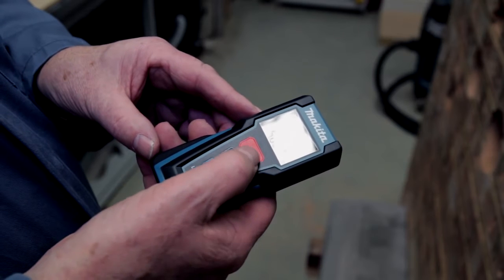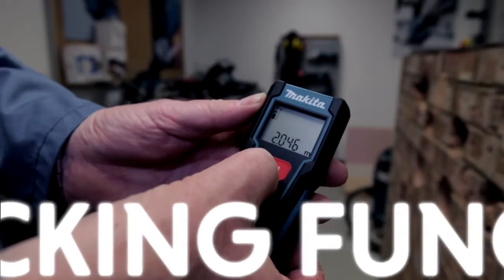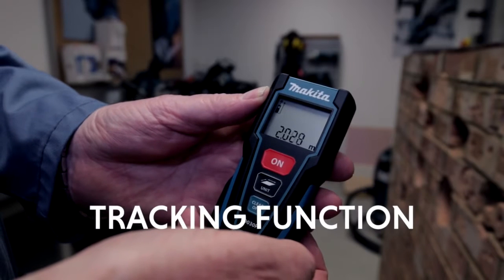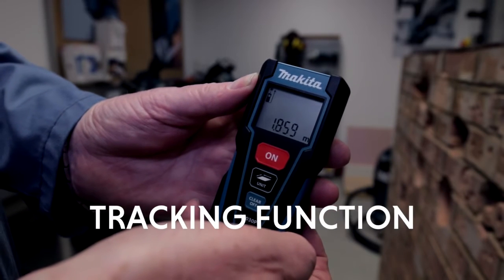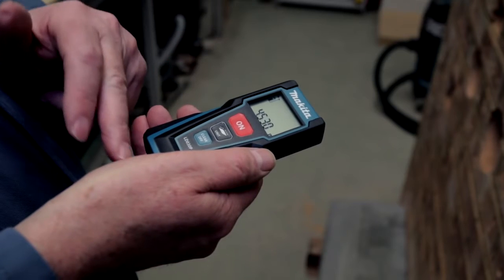If you're uncertain about the distance and you want the tracking device, just hold your thumb onto the on button to track. Anywhere you point the unit, it will give you the measurement to the back of the unit.